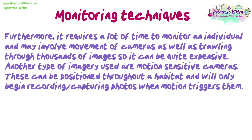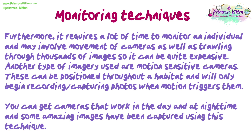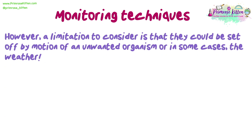Another type of imagery used are motion-sensitive cameras. These can be positioned throughout a habitat and will only begin recording or capturing photos when motion triggers them. You can get cameras that work in the day and at night time, and some amazing images have been captured using this technique. A limitation to consider is that they could be set off by motion of an unwanted organism, or in some cases, the weather.